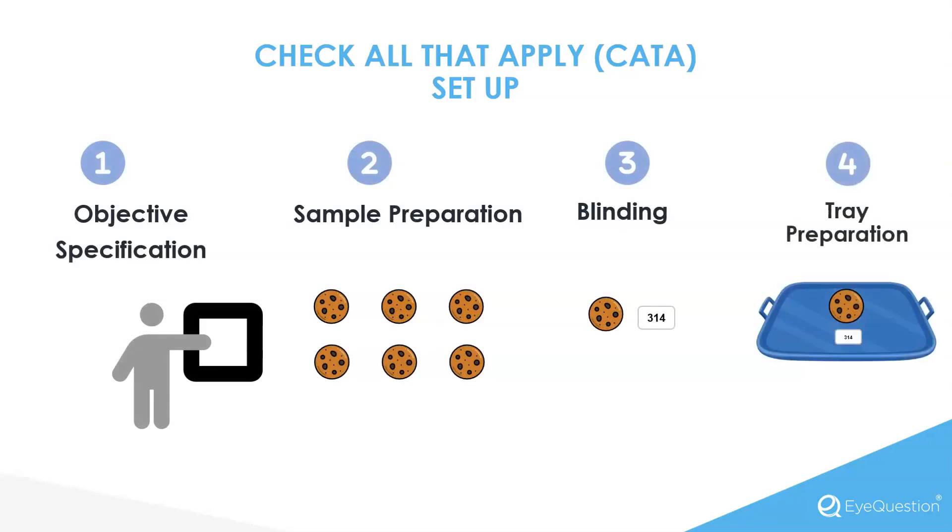Following that, you can proceed to prepare your sample and apply a blinding label to the products. Finally, you must arrange each sample in the proper sequence for a panelist to taste the product, ensuring that each panelist tastes the sample in a separate order.